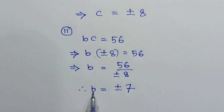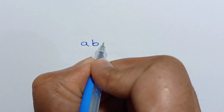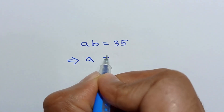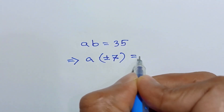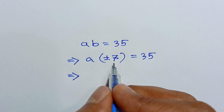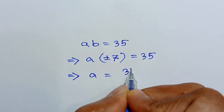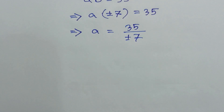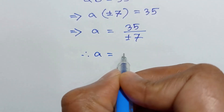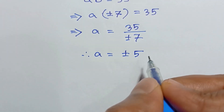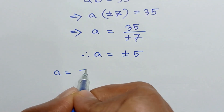Now substituting this value of b into equation number 1, we get ab is equal to 35, or a times plus or minus 7 is equal to 35. Dividing both sides by plus or minus 7, we get a is equal to 35 over plus or minus 7, which gives a is equal to plus or minus 5.